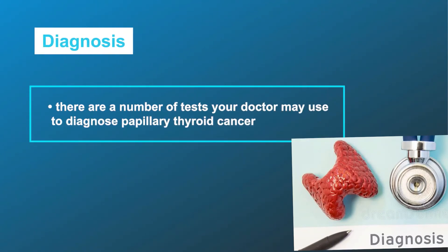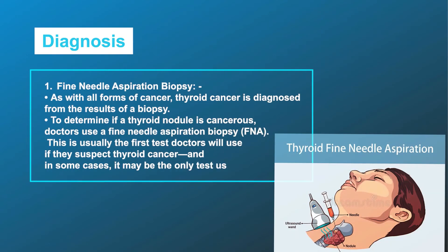Regarding diagnosis, there are a number of tests your doctor may use to diagnose papillary thyroid cancer. First, fine needle aspiration biopsy: as with all forms of cancer, thyroid cancer is diagnosed from the results of a biopsy. To determine if a thyroid nodule is cancerous, doctors use a fine needle aspiration biopsy (FNA). This is usually the first test doctors will use if they suspect thyroid cancer, and in some cases it may be the only test used.